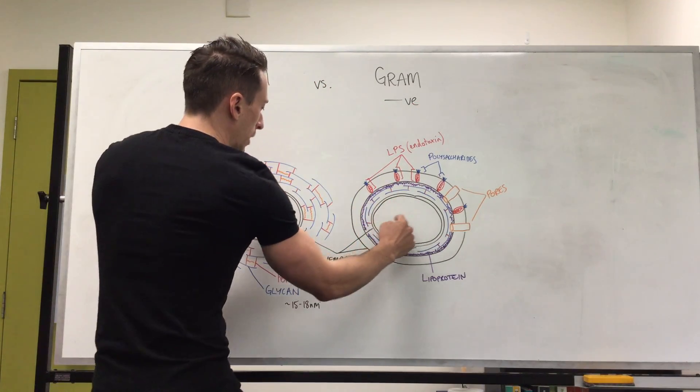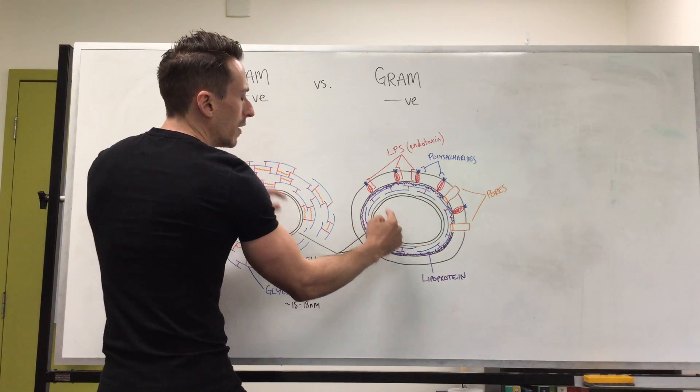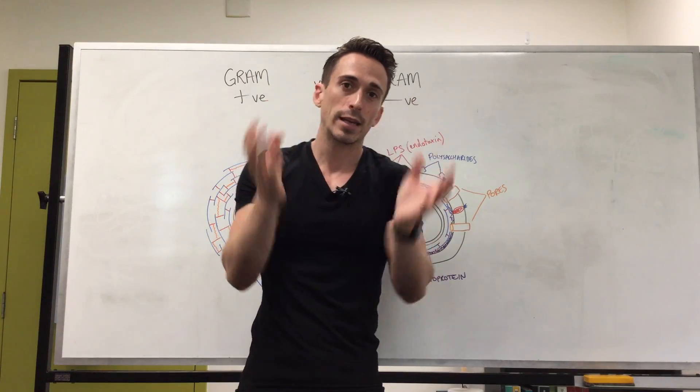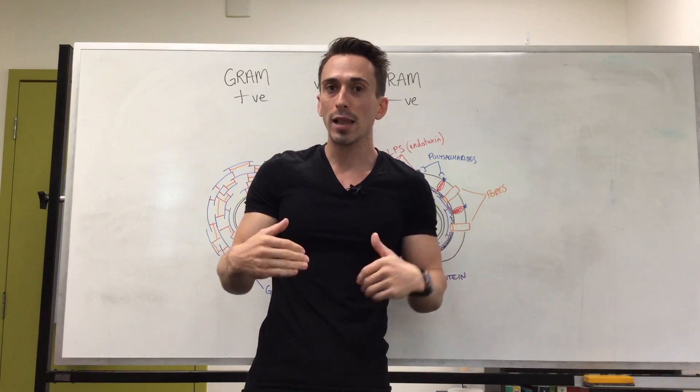Starting right in the middle, right in the center of the bacteria, you can see that both gram-positive and gram-negative have a cell membrane. Just like we have a cell membrane surrounding ourselves, bacteria have a cell membrane, and it's the same as ours, called a phospholipid bilayer.